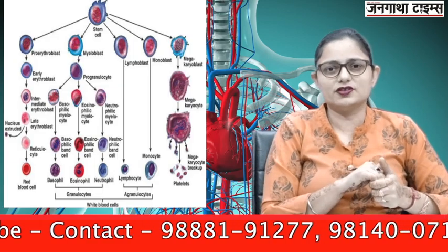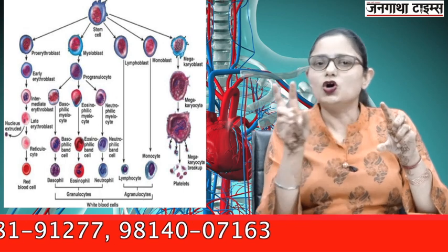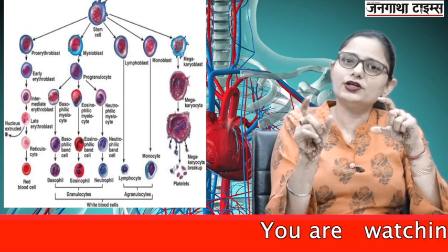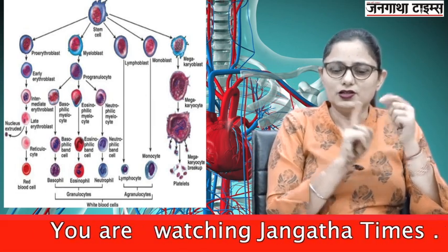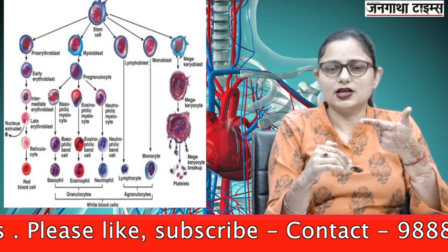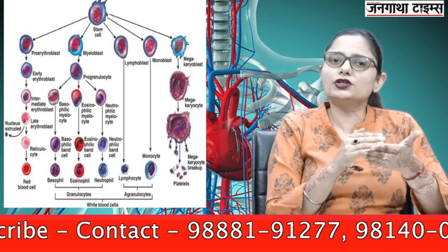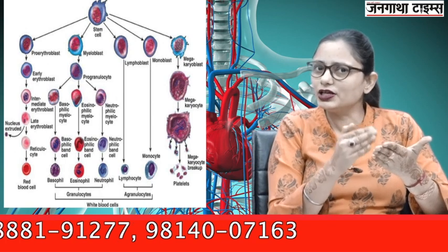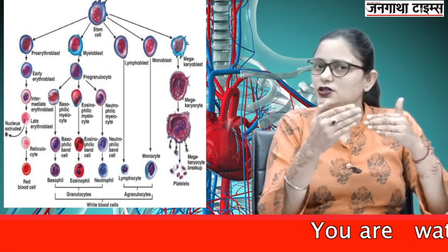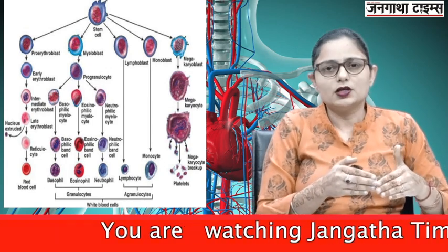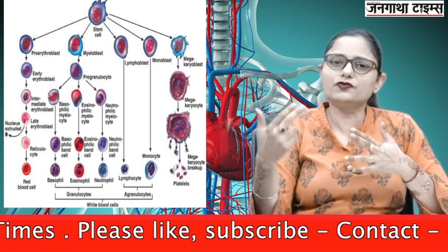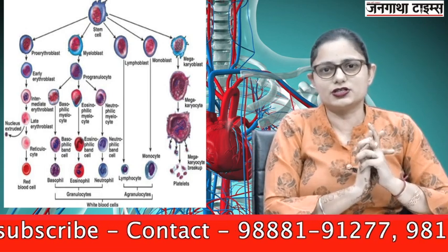The same hemocytoblast stem cell is responsible for the formation of all these cells. The stem cell gets converted into myeloblast, which gets converted into progranulocyte. The progranulocyte then gets converted into basophilic myelocyte, eosinophilic myelocyte, and neutrophilic myelocyte, which form basophil, eosinophil, and neutrophil respectively — these are the three granulocytes.